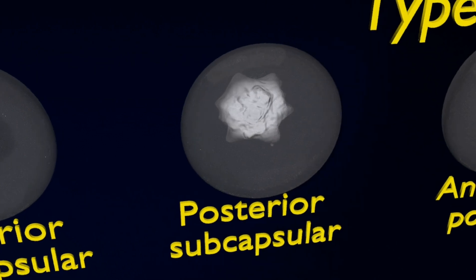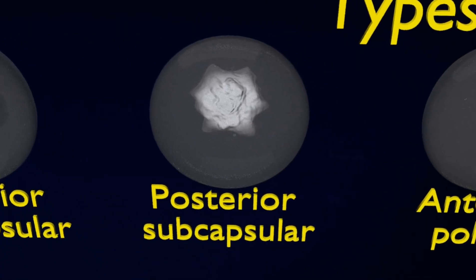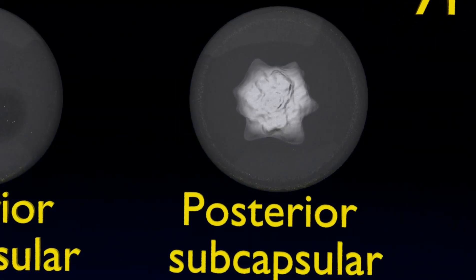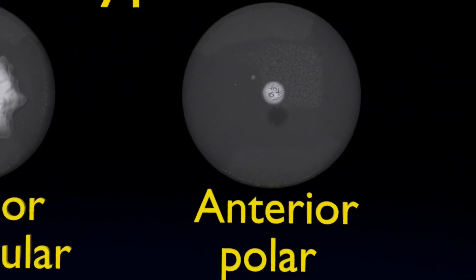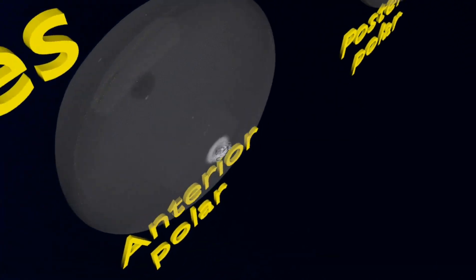The anterior polar: The cloudiness occurs outside the boundary of the frontal part of the cortex lens, as shown.